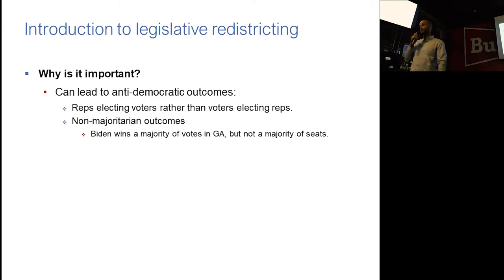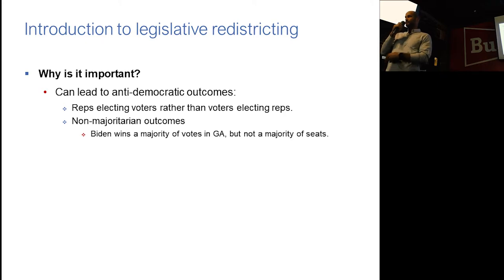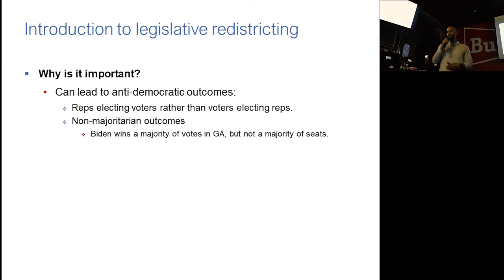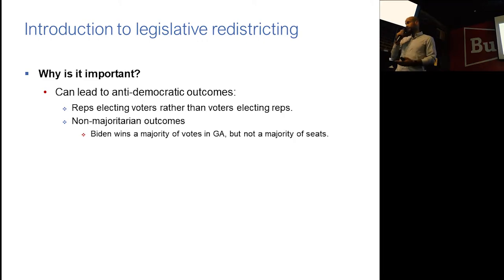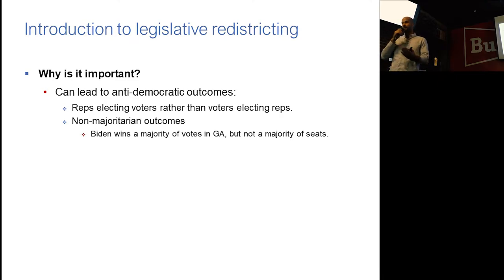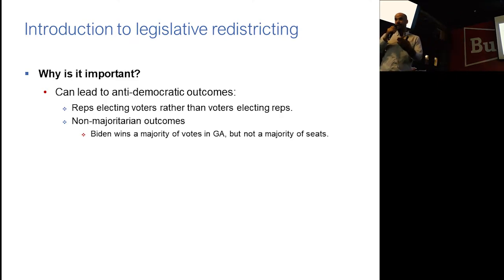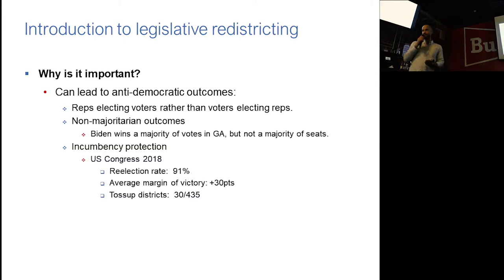One of the things I'll show you today is that in Georgia, Biden received the most votes. However, he does not win the most legislative districts. So if you were to aggregate his votes up into legislative districts — either Congress or the General Assembly — the Democrats by and large lose a majority of the seats. The other concern is incumbency protection.